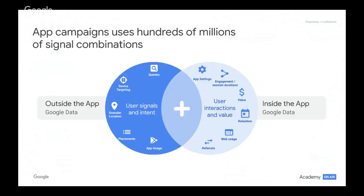Lastly, and before we move on to the next section with Nadia, here are a few of those signal combinations that can be put together. This is to give you a transparent insight into what goes into the calculations. Measuring the right type and amount of user signals and interactions is now directly connected to the performance of your app campaigns and therefore more important than ever.